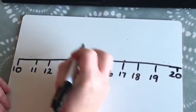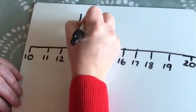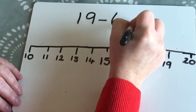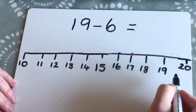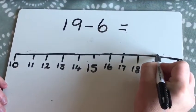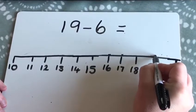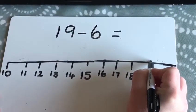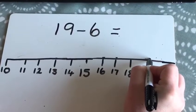What about if we did 19 subtract 6 equals? So you tell me what to do. That's right, I put my pen on 19. And what do I do next? That's right, I'm going to count backwards 6 numbers. So let's do it together.